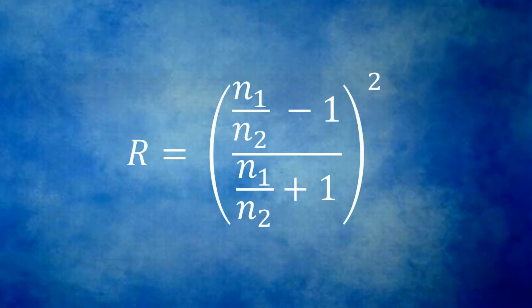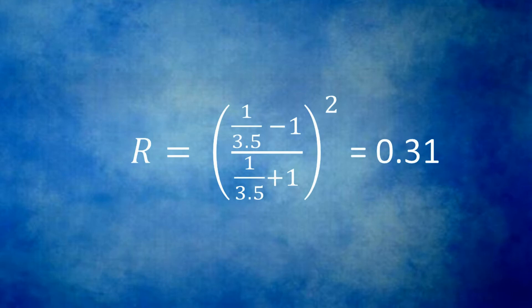We really cannot achieve 100% quantum efficiency. What you know from the video sequence on optics is that some light is going to reflect off the surface of silicon. There is an equation for that reflection. The equation relies on knowing the indices of refraction on either side of the surface. Assume air has an index of 1 and silicon has an index of 3.5. The formula works out to where we are going to reflect or lose about 31% of the incident light energy.